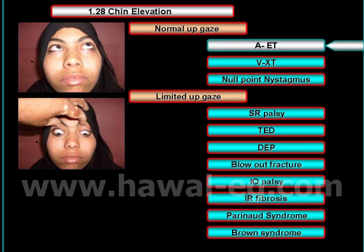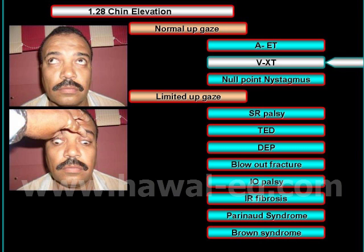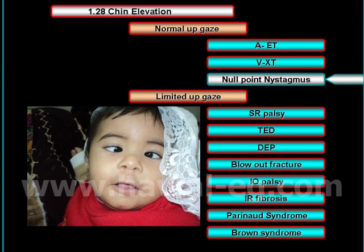Chin elevation with normal elevation of both eyes occurs in cases of A-pattern esotropia, where the esotropia increases in up gaze and diffuses in down gaze, or in V-pattern esotropia, where esotropia also increases in up gaze and diffuses in down gaze.